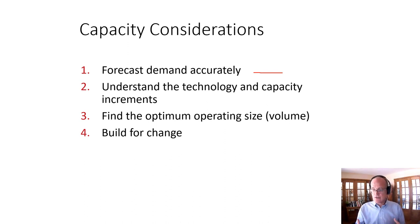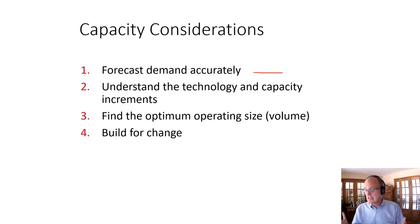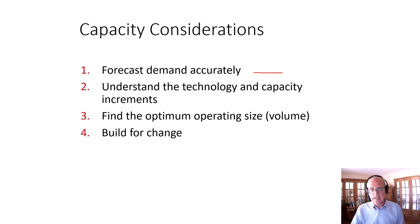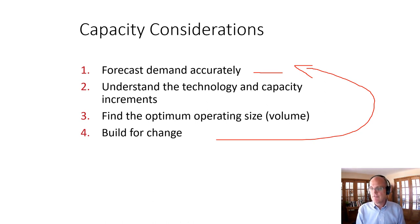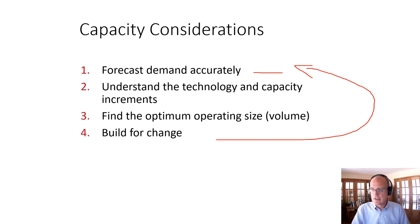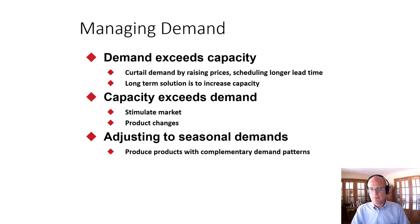Finding the optimum operating size matters. We hear a lot about economies of scale, but there can also be diseconomies of scale if we get too big. Deciding on the optimal operating size — both for effectiveness in serving customers and from a cost perspective — is important. We should also build for change: in anticipation of growth, we should be adding capacity in advance so that we can deliver on that growth.